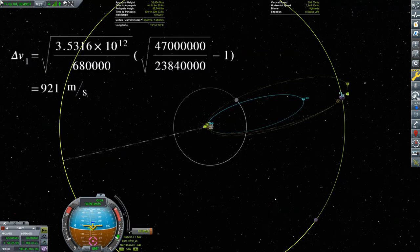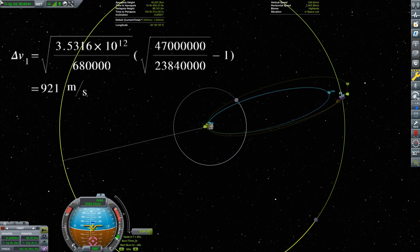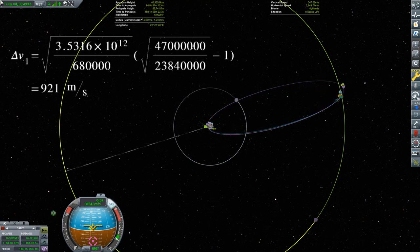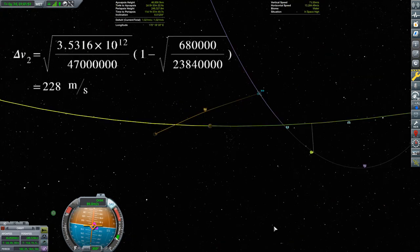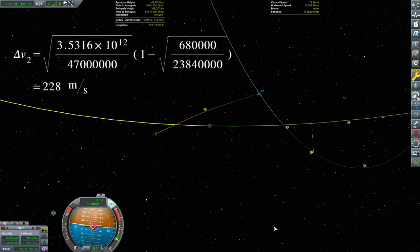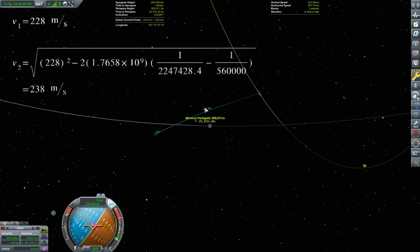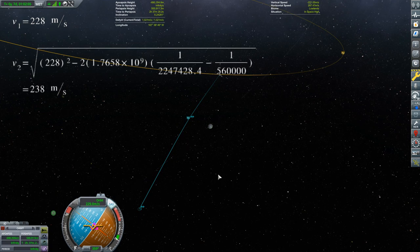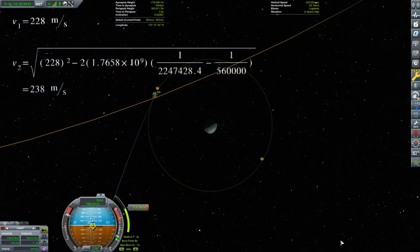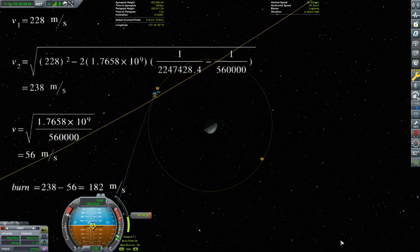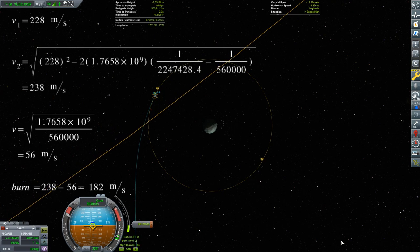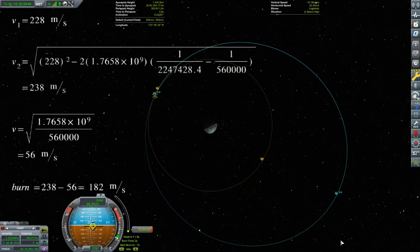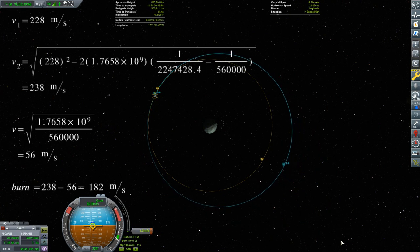First, there's the injection burn from LKO using the first vis-viva equation, which gets a burn of 921 meters per second. Next, we use the second vis-viva equation to calculate 228 meters per second for our encounter speed with Minmus's SOI. Shifting our frame of reference to Minmus, we then use the mechanical energy formula to calculate what our speed would be at closest approach, 238 meters per second. Minmus just doesn't speed us up like the moon does. Step four is to calculate the orbital velocity of 500 kilometers, 56 meters per second, which we subtract off to get a capture burn of 182 meters per second.